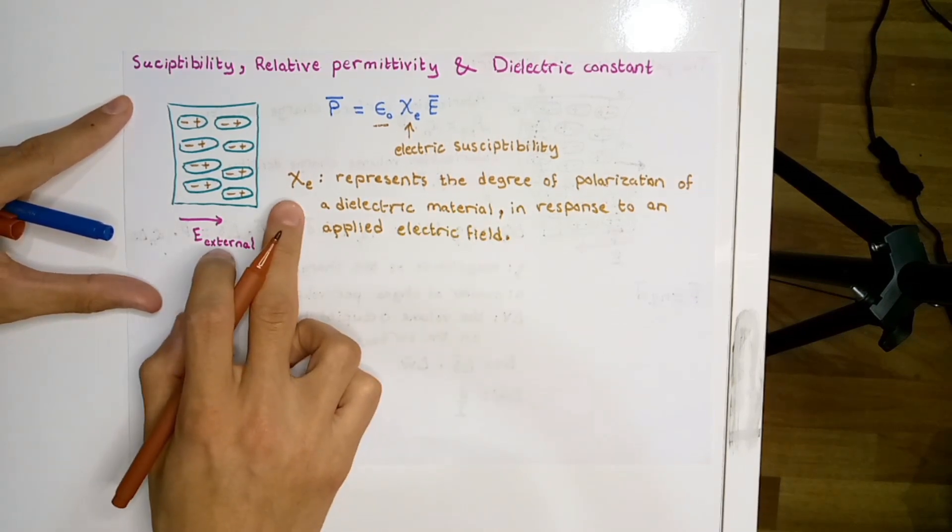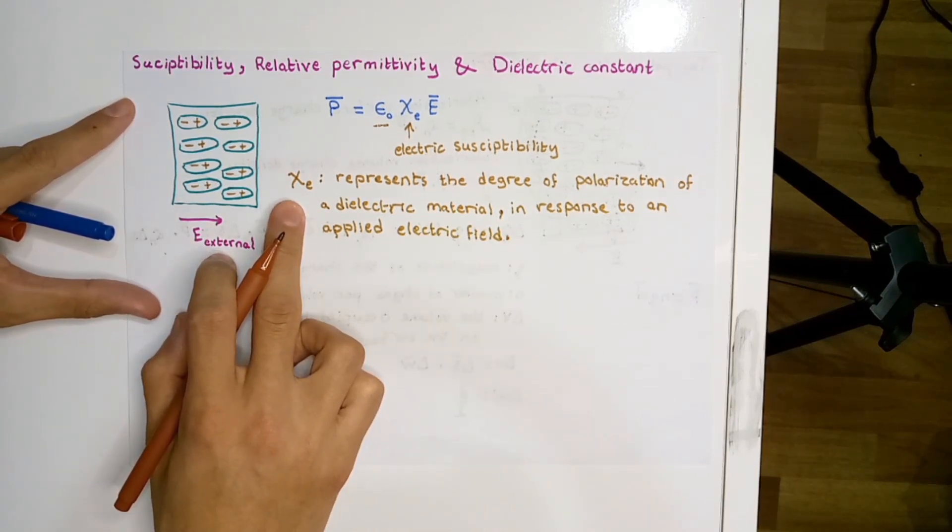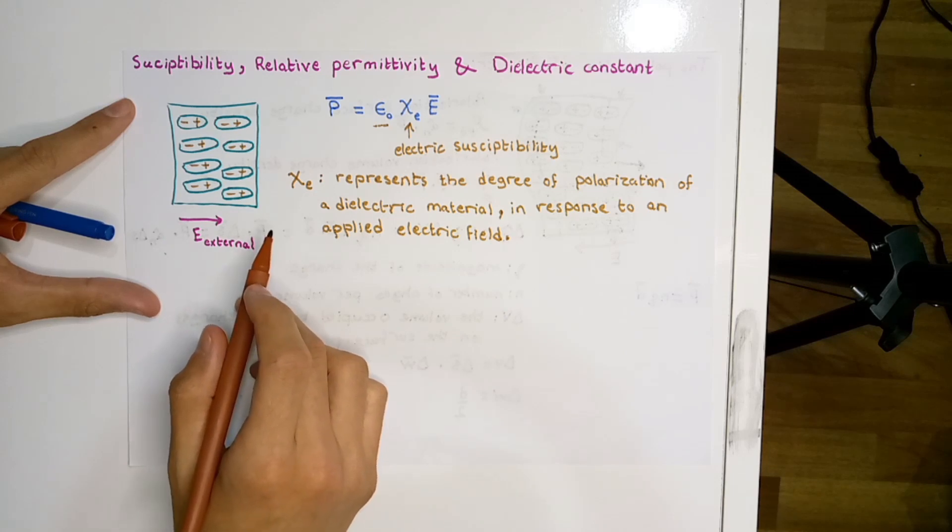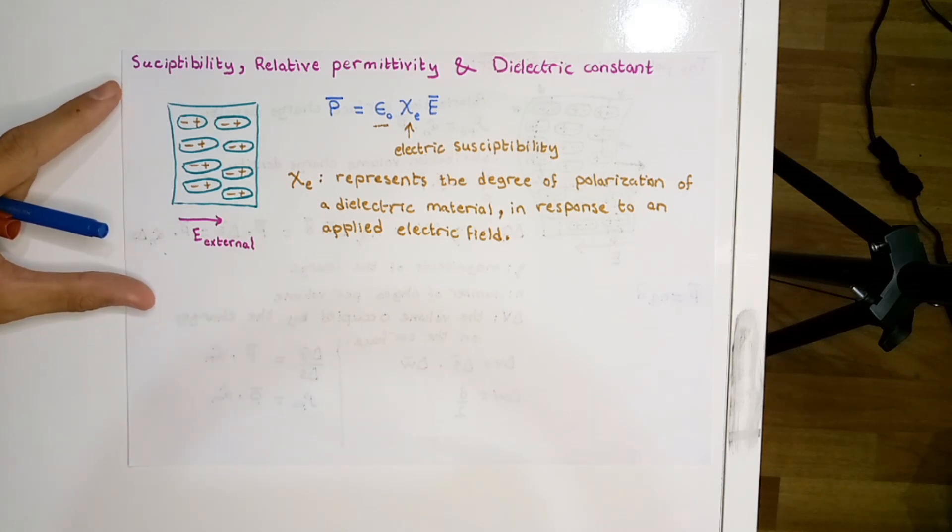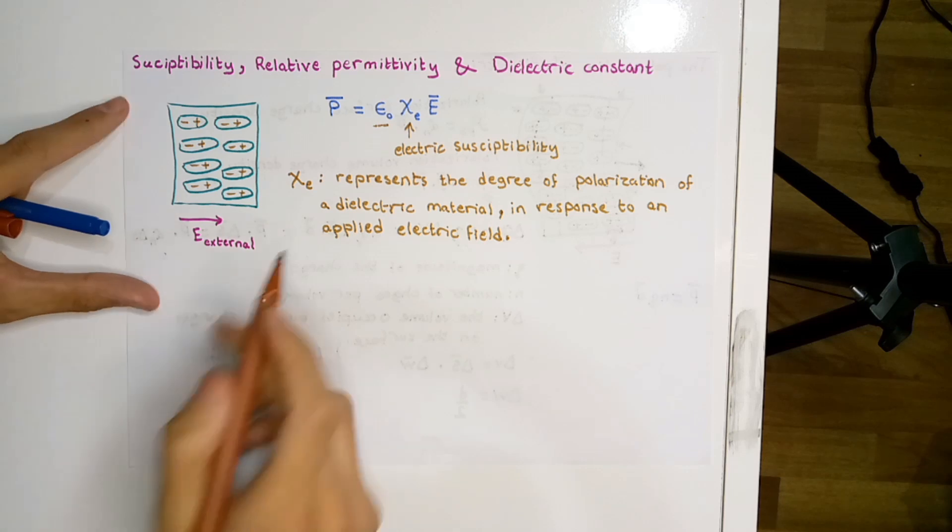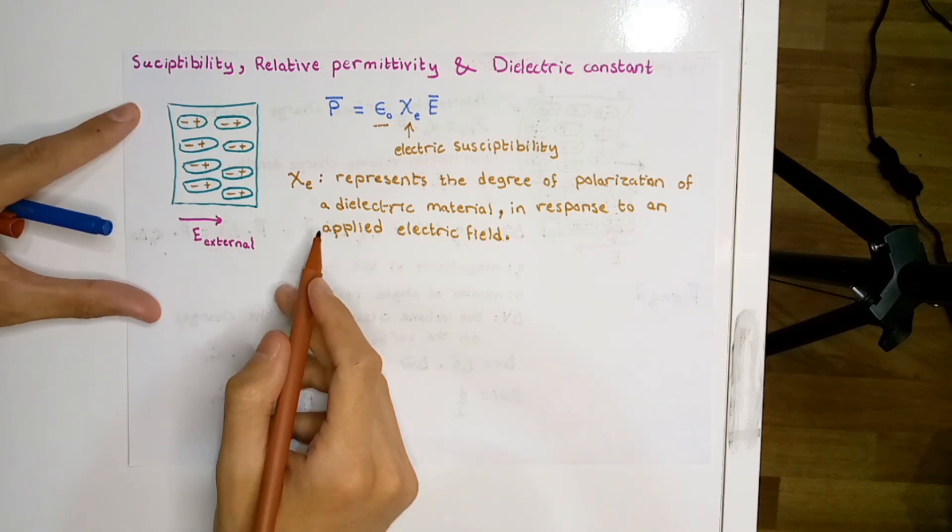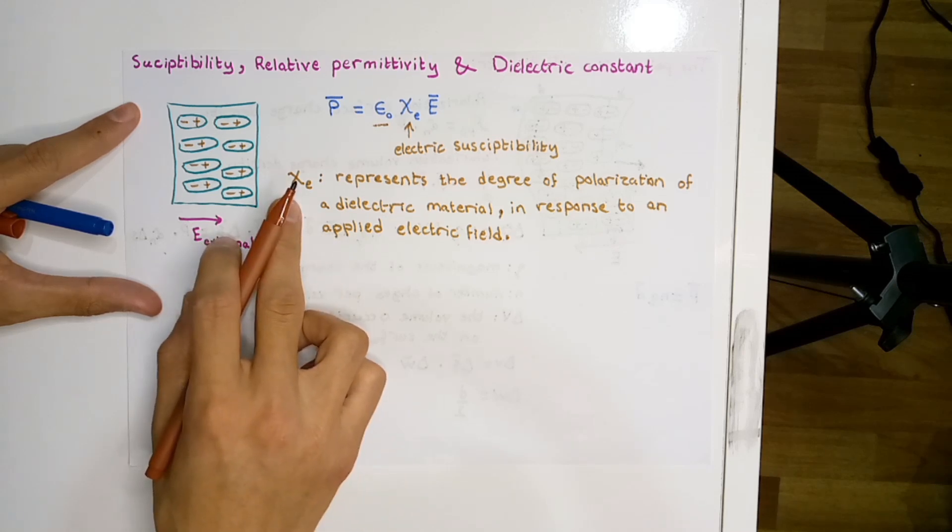Generally, χₑ, the susceptibility, is dependent on the microscopic structure of the material and some external factors like temperature. But this is out of the scope of our discussion today. Actually, we are going to derive another constant instead of the electric susceptibility.